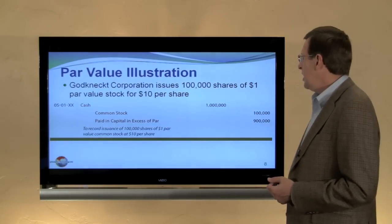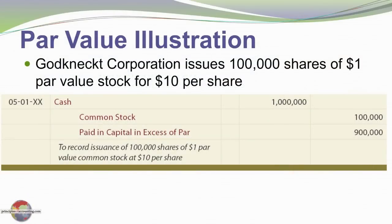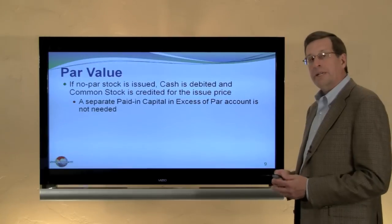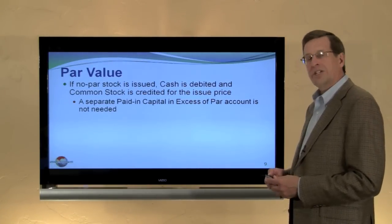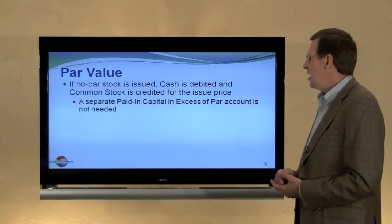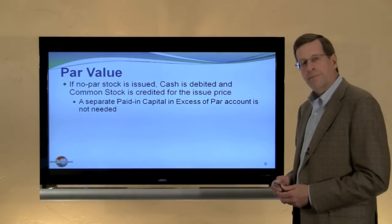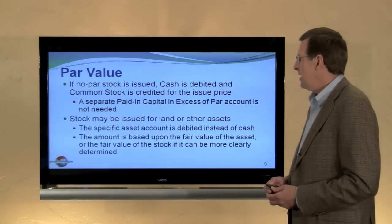As shown in this journal entry, the company issued 100,000 shares of $1 par value stock for $1,000,000 — so they issued it at $10 a share. There's the debit to cash of $1,000,000. The credit to common stock is $100,000 (that's 100,000 shares at $1 par per share), and the $900,000 difference goes to paid-in capital in excess of par. Some companies may issue stock without par value, in which case cash is debited and common stock is credited for the issue price, with no need to maintain a separate paid-in capital account.